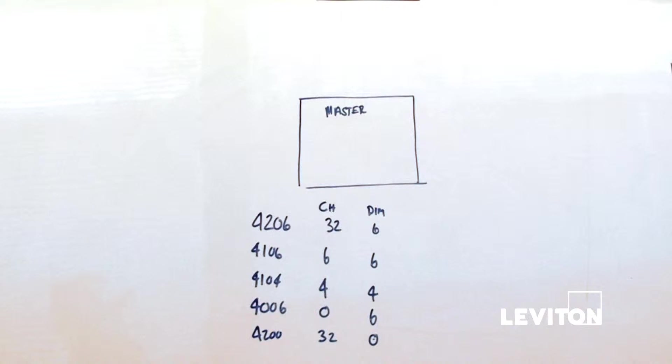For example, if we have a 4206 and a 4006, I've got two devices with six channels each. But the single device, the 4206, is what's going to be controlling all of them. We'll talk about an example of that in a few minutes.